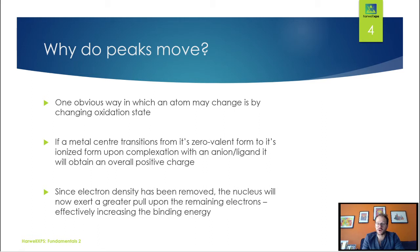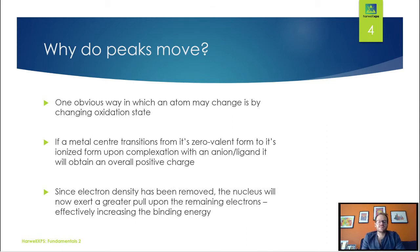For example, if you think about photoionizing silver metal versus silver 1+, then the pull on those electrons in the silver 3D orbital is going to be much greater on the silver 1+ than in the silver metal. So we're going to have an increased binding energy there.